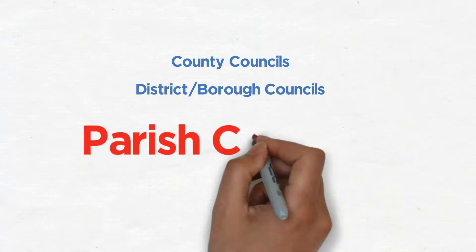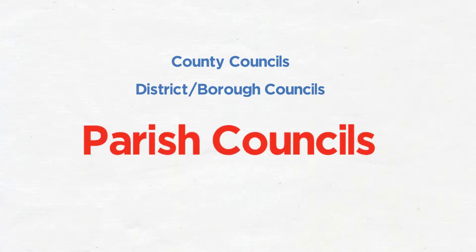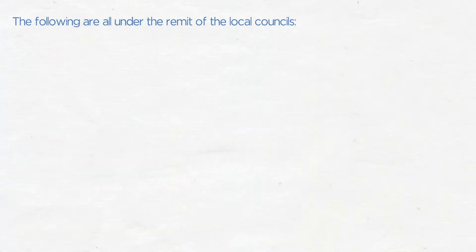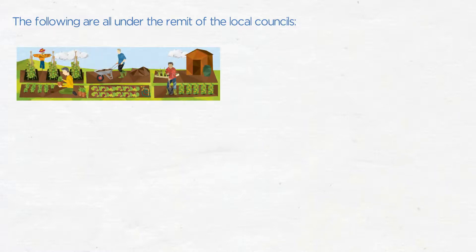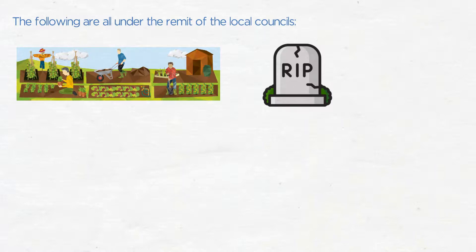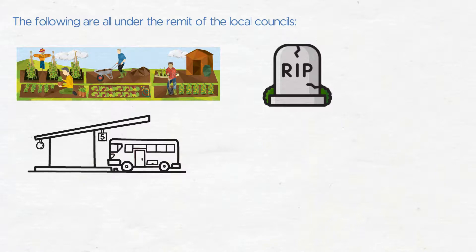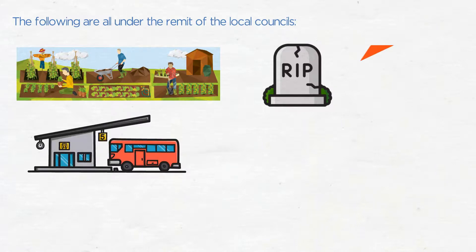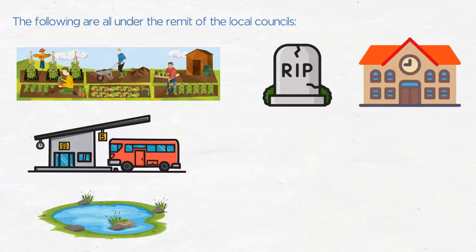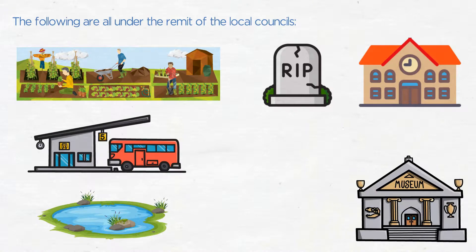Parish Councils are another layer of local government which provide valuable local services. Often people think they are only volunteers, but the Parish Council is a legal entity with formal accountability. The following are all under the remit of local councils: allotments, burial grounds, cemeteries, churchyards and crematoria, bus shelters, community centres, conference centres, halls, public buildings, drainage ditches and ponds, entertainment and the arts, and footpaths.